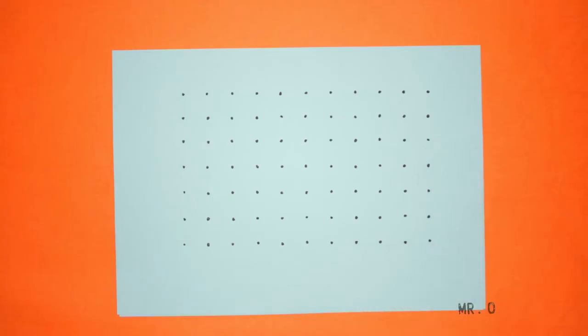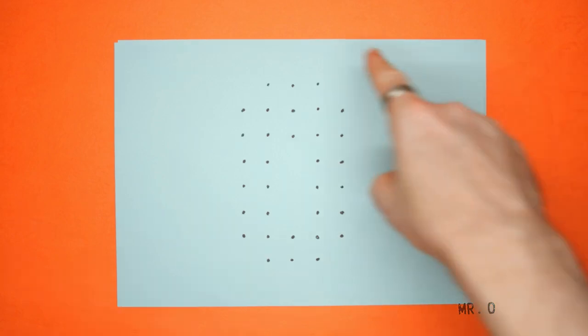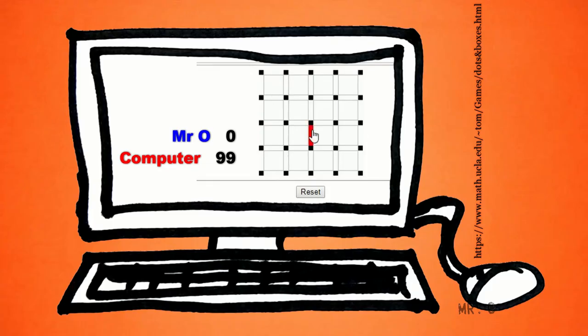Your board can be any size, depending on how long you want to play. You can even have different shapes. This one is in the shape of an O. And there are online versions if you want to practice.